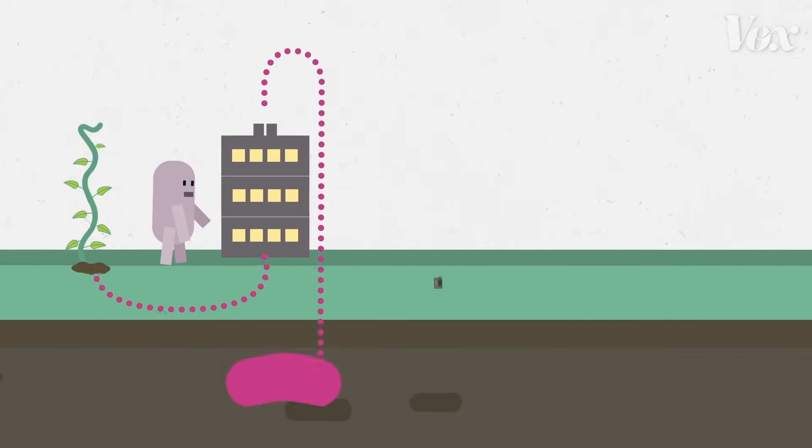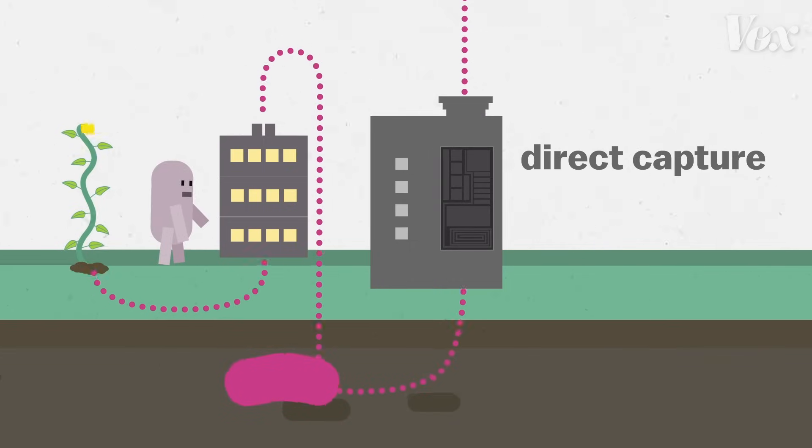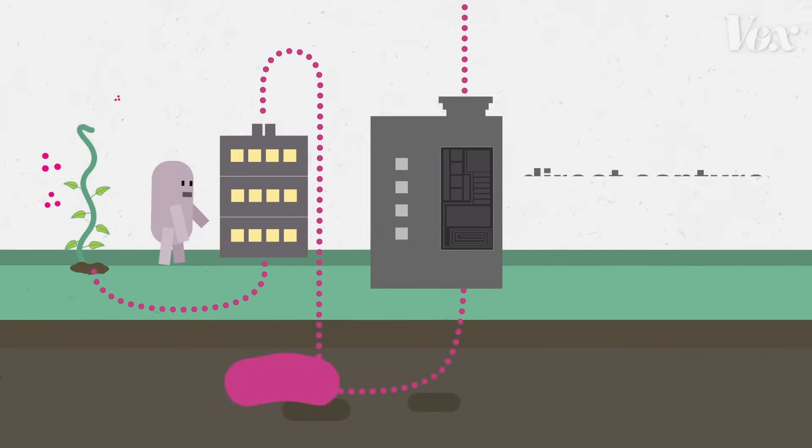They could also build machines to suck air from the atmosphere and filter out the carbon. But they haven't figured out how to do this fast enough.